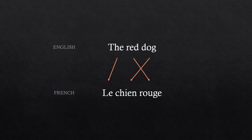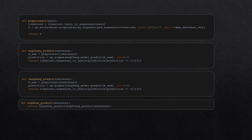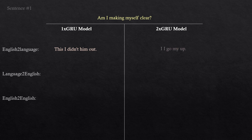Now onto the exciting stuff. To test the model, I created a preprocessing function as well as three functions for translating sentences into and from the new language. I also made an alternate version of the model with a single GRU layer instead of two, to compare the outputs. The first sentence I ran through the model is: 'Am I making myself clear?' The model with one GRU layer outputs: 'This I didn't him out.' The model with two GRU layers takes another approach and outputs: 'I I go my up.' I should mention that the models can't output any punctuation or capitalization, so I added this afterwards.